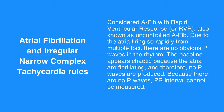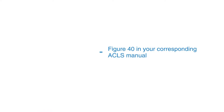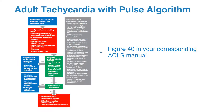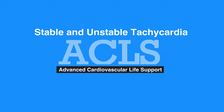Because there are no P-waves, the PR interval cannot be measured. The QRS complex measures less than 0.12 seconds. For the adult tachycardia with pulse algorithm, refer to figure 40 in your corresponding ACLS manual. This concludes our lesson on stable and unstable tachycardia. Next, we'll review Acute Coronary Syndrome.